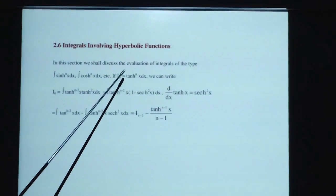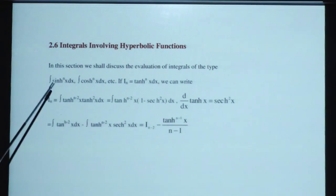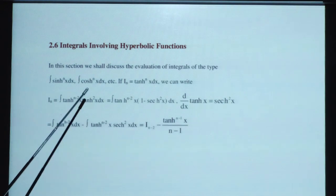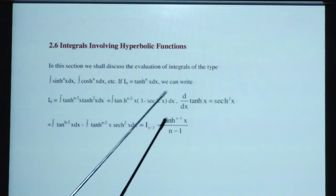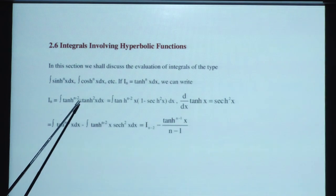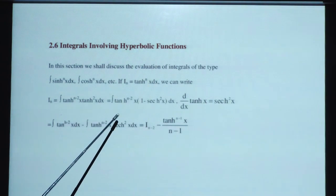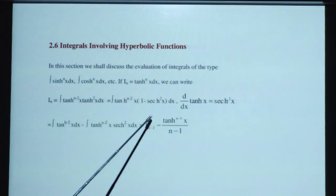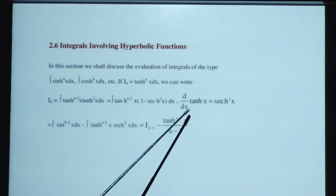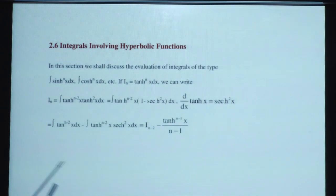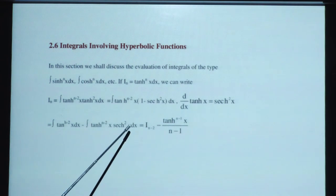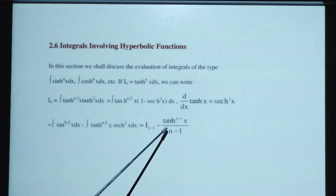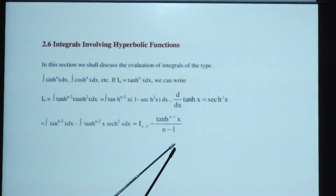Integrals involving hyperbolic functions. In this section we shall discuss evaluation of integrals of the type integration of sinh^n(x) dx and integration of cosh^n(x) dx. If I_n = integration of tanh^n(x) dx, we can write: I_n = integration of tanh^(n-2)(x) tanh²(x) dx = integration of tanh^(n-2)(x)(1 - sech²x) dx = I_(n-2) - tanh^(n-1)(x)/(n-1). This is the final result.